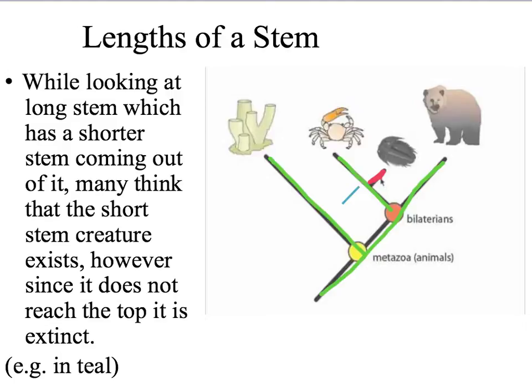However, when we are reading this, this short stem here tells us that this species no longer exists and that it is extinct. A lot of people make the mistake of thinking that this short stem, the species still exists. However, we need to know that the small stem tells us that it does not.